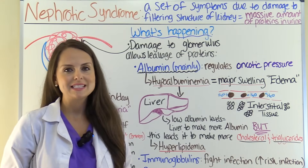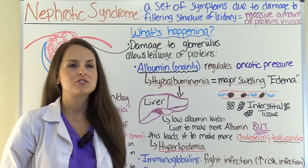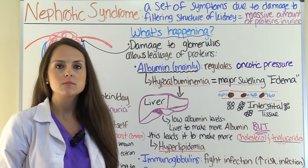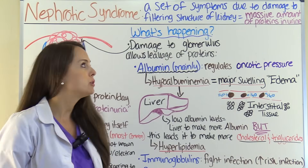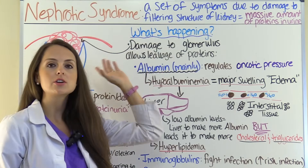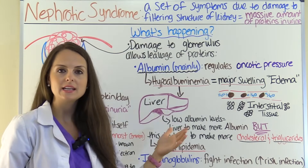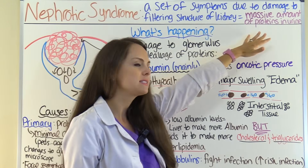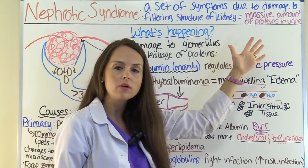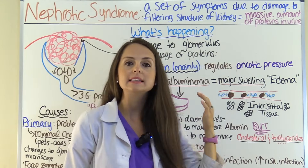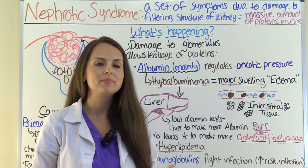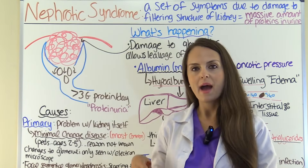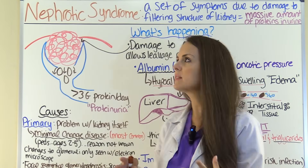First, let's talk about what nephrotic syndrome is. This is a set of symptoms due to damage to the filtering structure of the kidney, and this leads to a massive amount of proteins being leaked into the urine. So let's take a step back and look at the nephron to see what's going on in this condition.